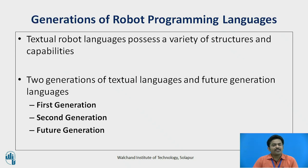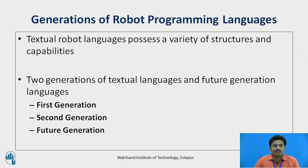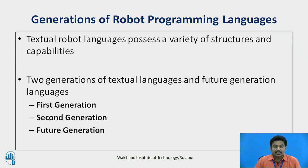The textual robot languages possess a variety of structures and capabilities and are still evolving. We identify two generations of textual languages and speculate about what a future generation might be like: first generation, second generation, and future generation languages.